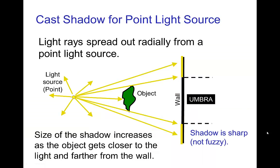A more interesting type of light source would be a point light. With a point light, the light rays come out radially in every direction. The shadow is still sharp, it still has a dark umbra, however the size of the shadow is going to change depending on the distance between the light source and the object, and the distance between the object and the wall.